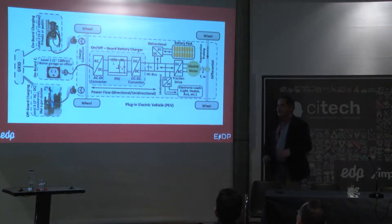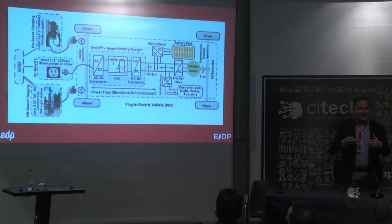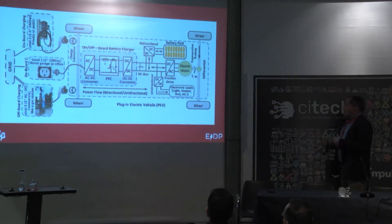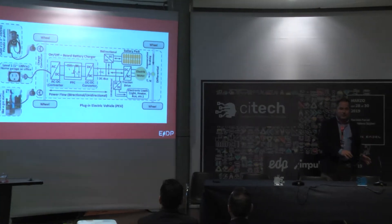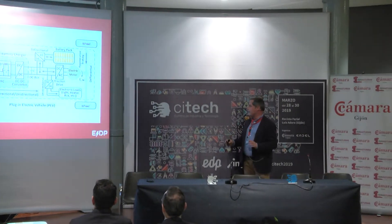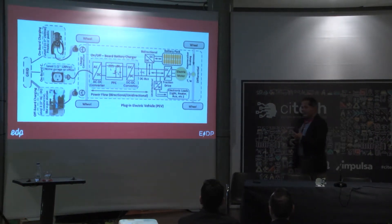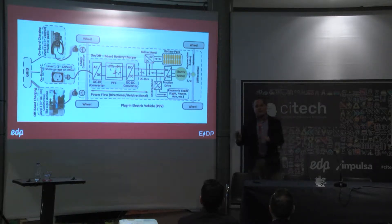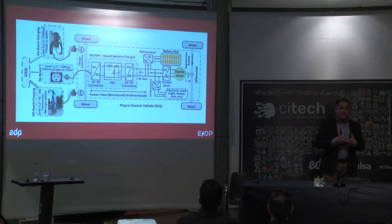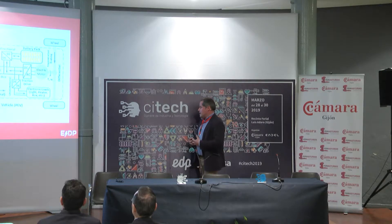El coche cambia radicalmente el concepto. Sigue teniendo cuatro ruedas, un habitáculo, se sigue podiendo conducir, se habla ya de conducción autónoma. Pero toda la maquinaria del coche se simplifica y empieza a tener importancia la electrónica, los convertidores de corriente alterna a corriente continua, los filtros, la batería y el motor eléctrico. Desaparecen los circuitos de lubricación, transmisión de potencia, engranajes y temas mecánicos muy importantes. El motor de combustión tradicional se sustituye por un motor eléctrico, gobernado con electrónica, algo tecnológicamente innovador con unas prestaciones muy relevantes.